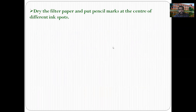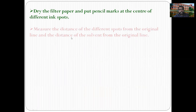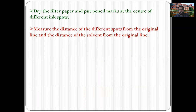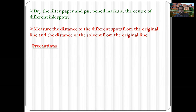Dry the filter paper and put a pencil mark at the center of the different ink spots. Measure the distance of different spots from the original line and the distance of the solvent from the original line. This is useful for calculating the retardation factor (Rf value) of the components, which is one of the characteristic properties of each component.